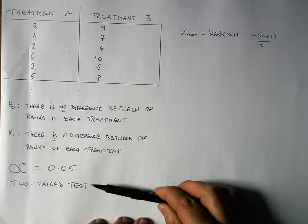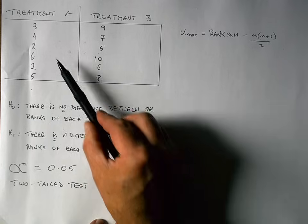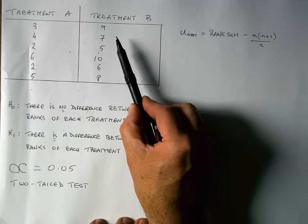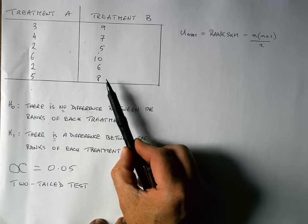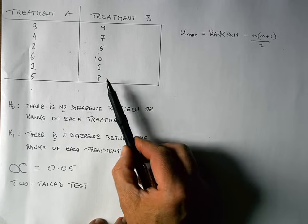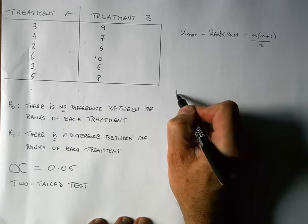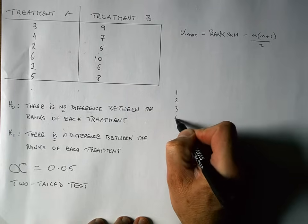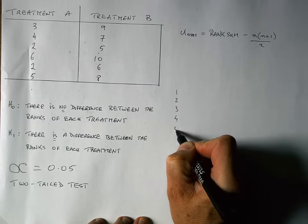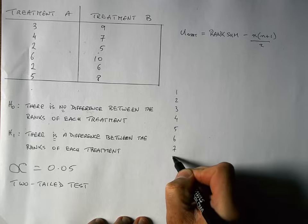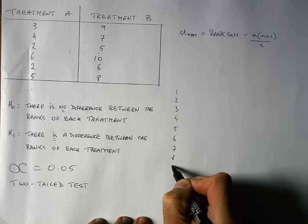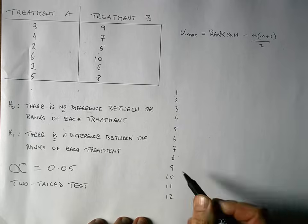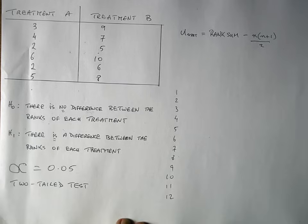As it is a rank-based test, I need to rank all of these numbers — my six values for treatment A and my six values for treatment B — giving me a total of twelve numbers. My first task is to rank each of these twelve values from one to twelve, so I'm going to write out a series of numbers from one to twelve to rank each of my individual values.